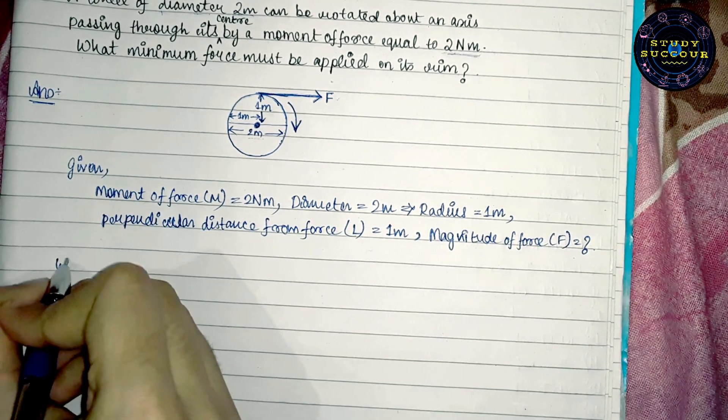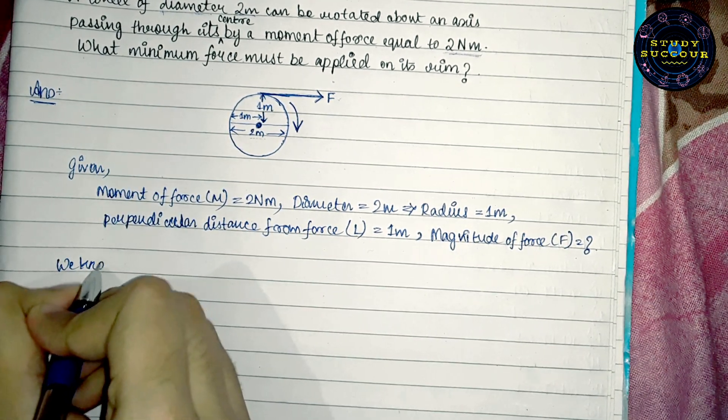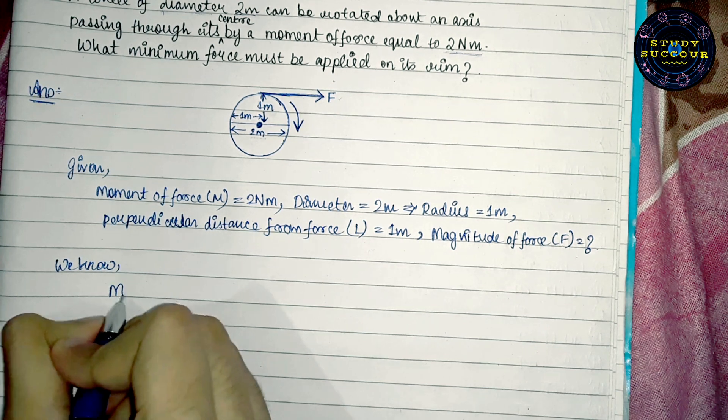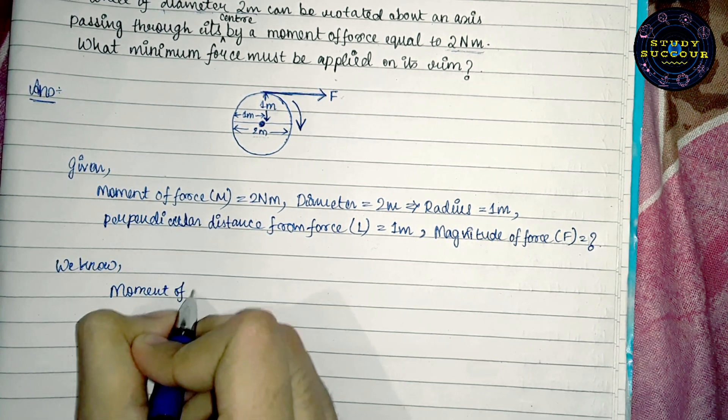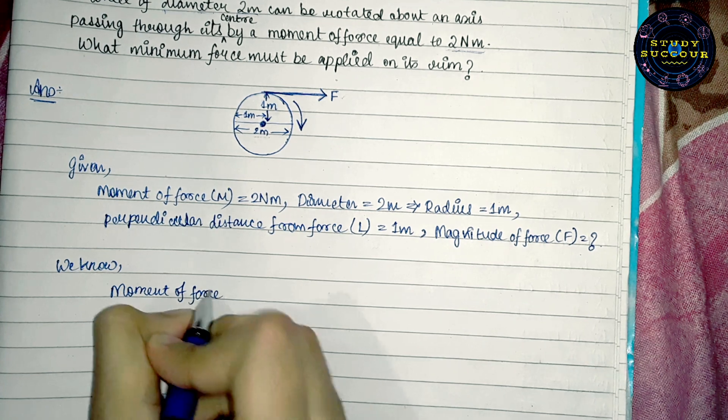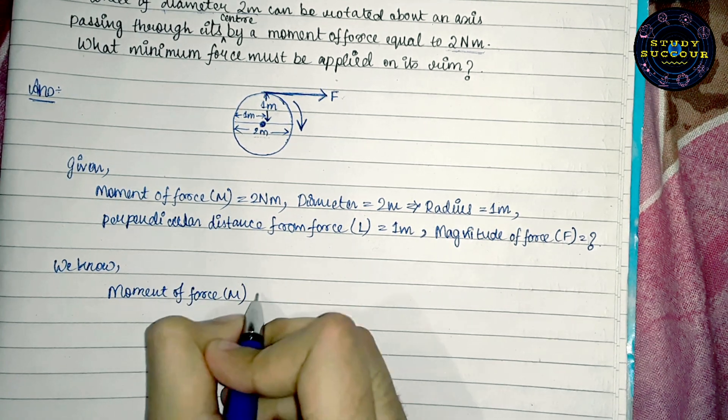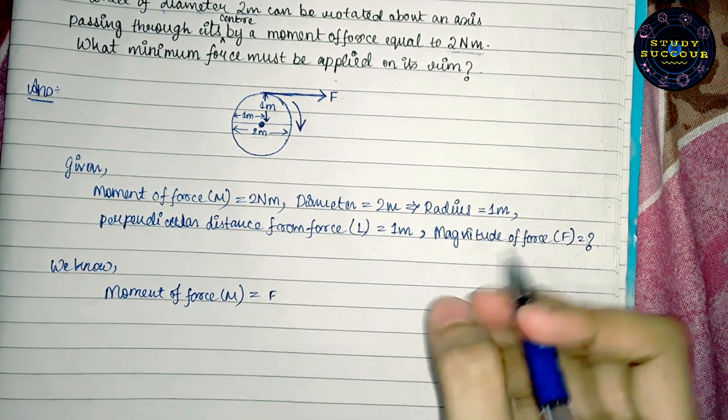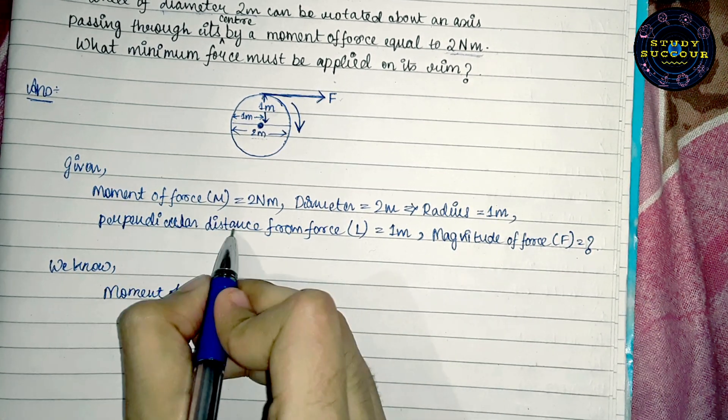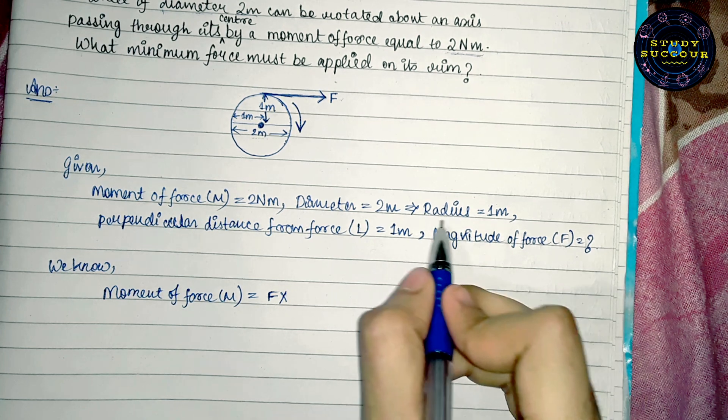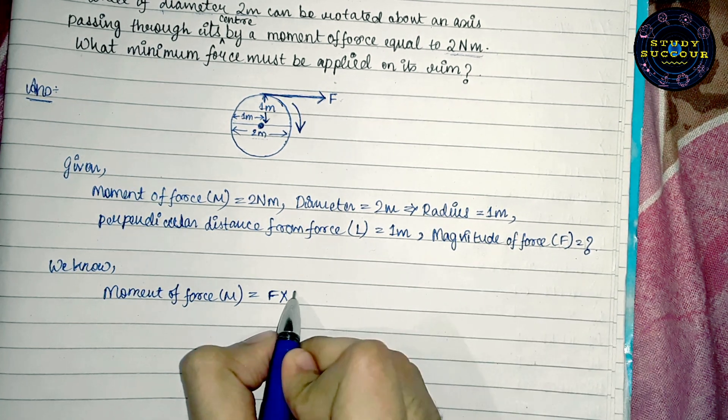Now, we know that moment of force M is equals to magnitude of force F into perpendicular distance from force that is the radius equals to L.